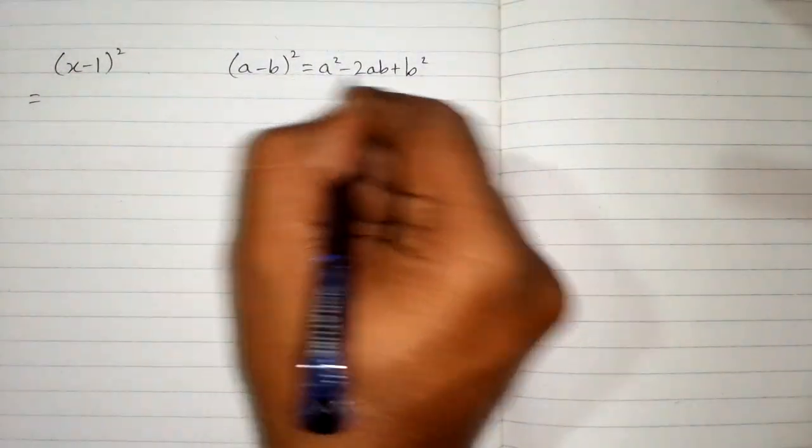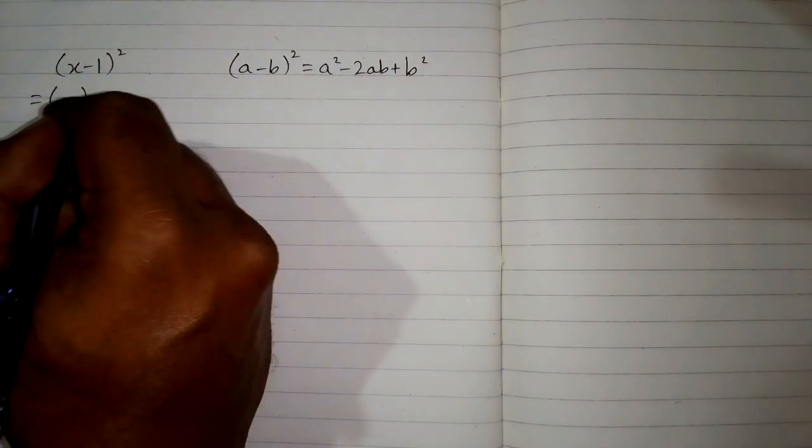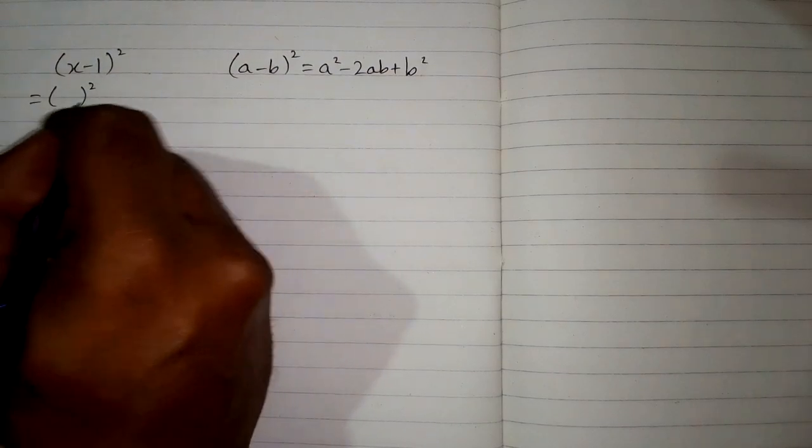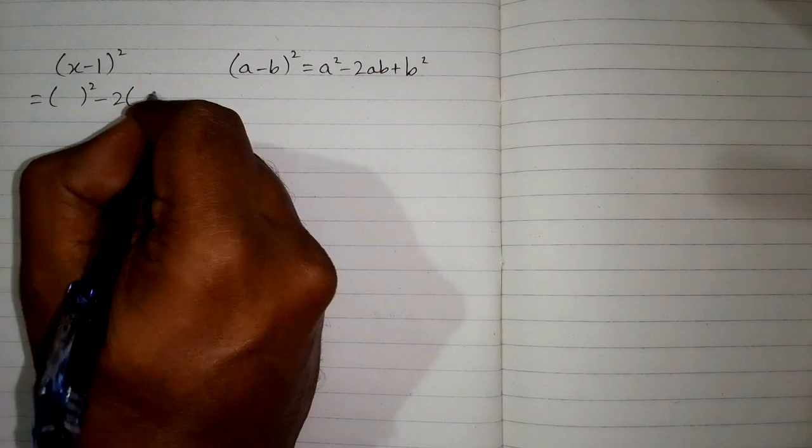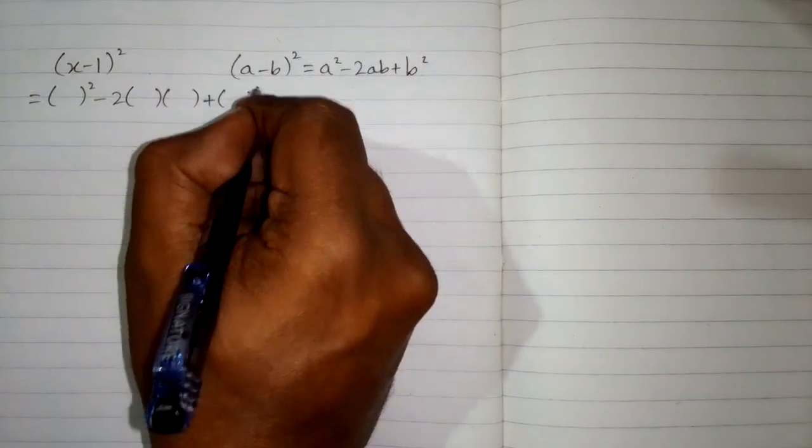So first we will write the structure of this formula and for this we put brackets in place of a and b. So first we write a square then minus 2ab plus b square.